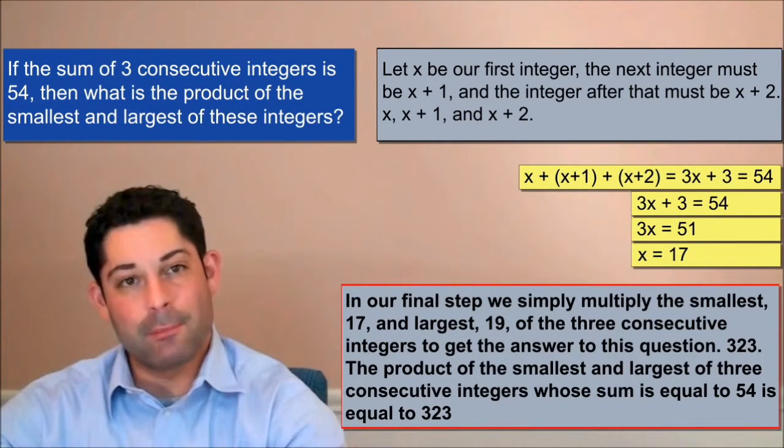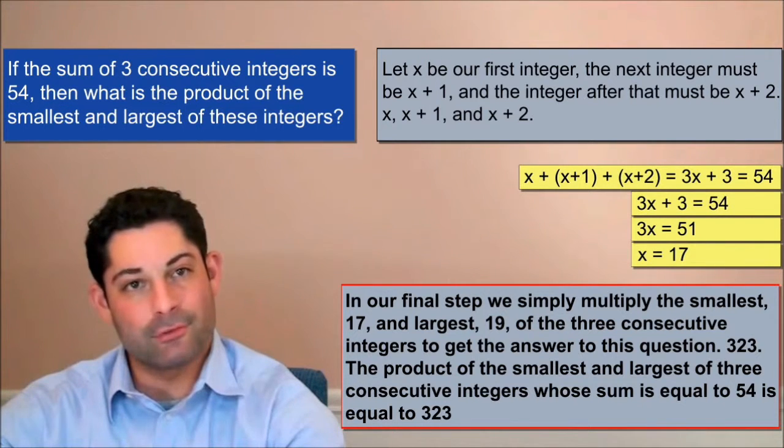In our final step, we simply multiply the smallest, 17, and the largest, 19, of these three consecutive integers to get the answer to this question: 323.